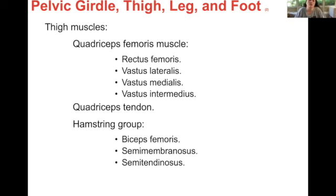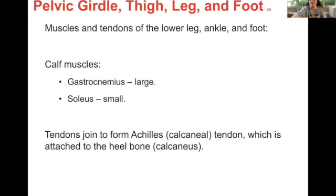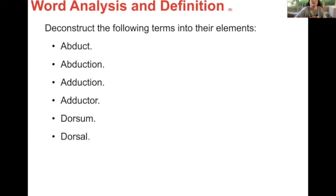Now we've got our thigh muscles: quadriceps and hamstrings. Calf muscle. Tendons — most people have heard of the Achilles tendon or Achilles heel; this is the actual anatomical name for it. Deconstruct these words — we've already talked about abduction and adduction, so you should be able to figure those out.